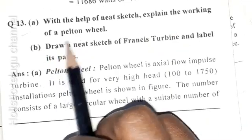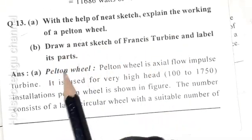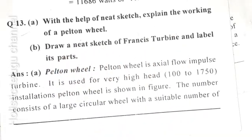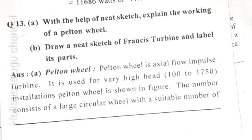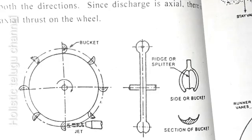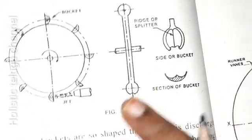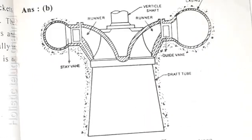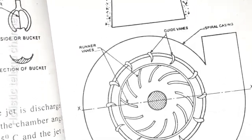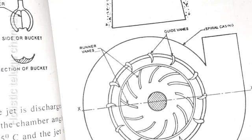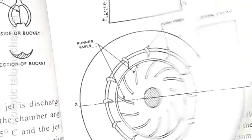Next question: with the help of a neat sketch, explain the working principle of Pelton wheel. Draw a neat sketch of Francis turbine and label its parts. I am going to explain how to draw the Francis turbine diagram for the first step and continue to practice the diagram. The working principles of turbines.